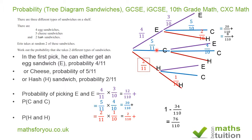Continuing the direct method, we could pick a cheese sandwich then a hash sandwich: 5 over 11 times 2 over 10, which gives 10 over 110. There are additional combinations — a hash sandwich then an egg sandwich and a hash sandwich then a cheese sandwich — which contribute the remaining totals.